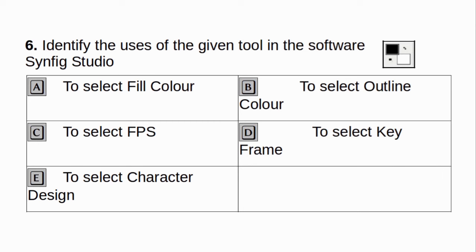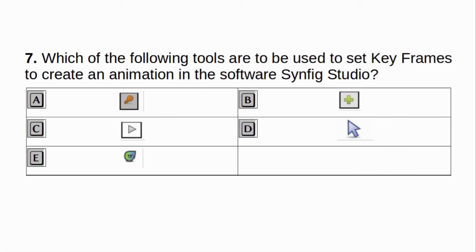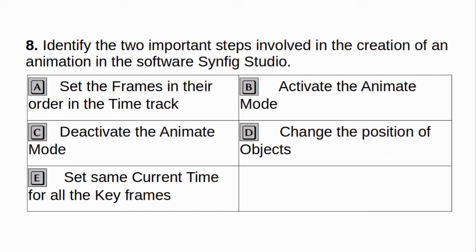Identify the uses of the given tool in the software Synfig Studio. A. To select fill colour. B. To select outline colour. C. To select FPS. D. To select keyframe. E. To select character design. Answer: A and B. Which of the following tools are to be used to set keyframes to create an animation in the software Synfig Studio? Answer: A and B.